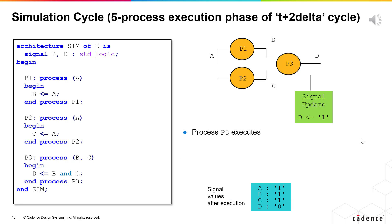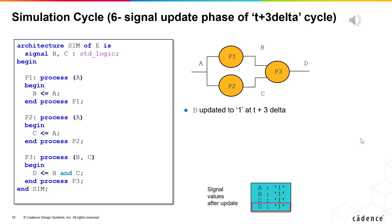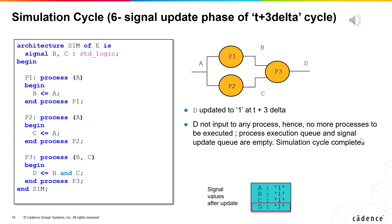When P3 executes, the value 1 is assigned to D. This is a new value for D, so the assignment is placed on the signal update list. No more processes require execution, so simulation moves on to the signal update phase of the next cycle. At t plus 3 delta, signal D is updated to 1. D is not in the sensitivity list of any process — it is an output from this component. There are no more processes to be executed, and the model is waiting for another change in the input A. Therefore, for a change in A, the model has taken three delta cycles to reach a steady state.